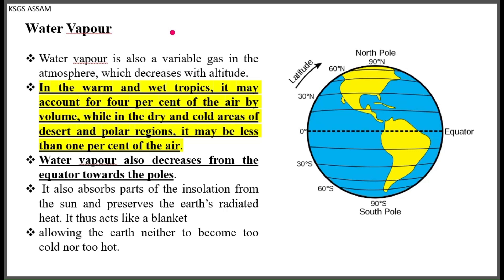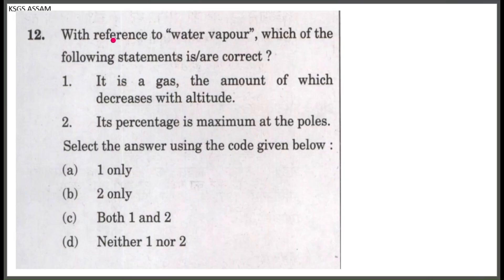Namaskar. Our series begins with the first question with reference to water vapour. Which of the following statements is correct? Statement 1: it is a gas the amount of which decreases with altitude. Statement 2: its percentage is maximum at the poles.